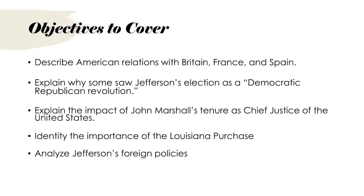We will start by examining American relations with the major European powers at the turn of the 19th century. The United States found itself caught between Britain and France, both of whom were engaged in a global struggle — the Napoleonic Wars. Britain's policy of impressment, where American sailors were forcibly recruited into the British Navy, strained relations. Meanwhile, France's embargo policies affected American trade. Thomas Jefferson responded with the Embargo Act of 1807, which aimed to protect American interests by restricting foreign trade. However, this controversial policy had severe economic consequences and did not resolve the underlying issues.